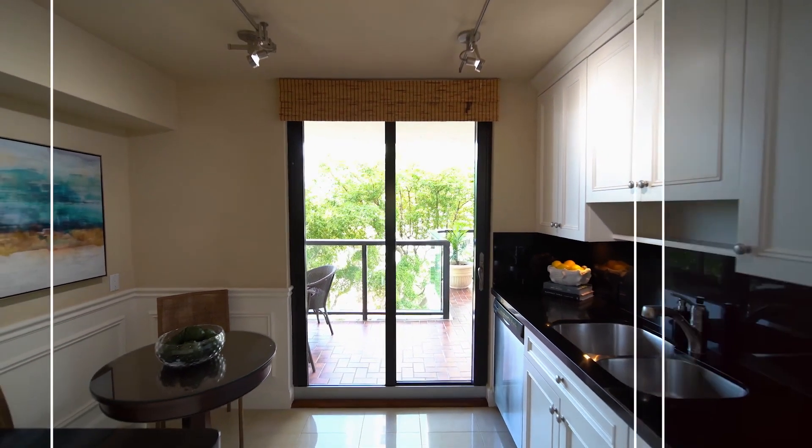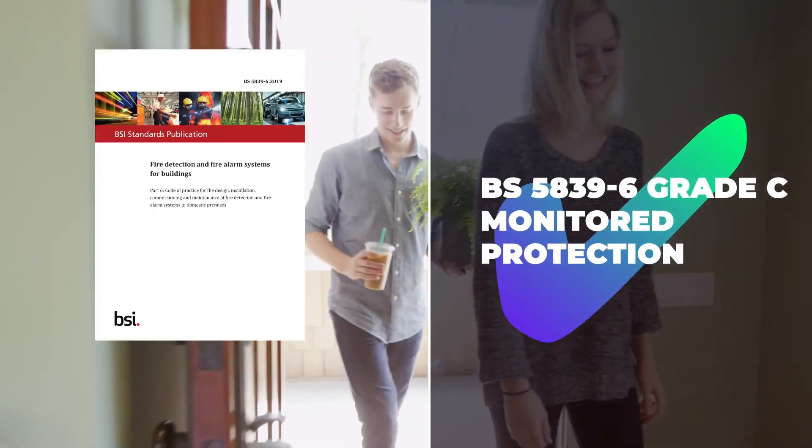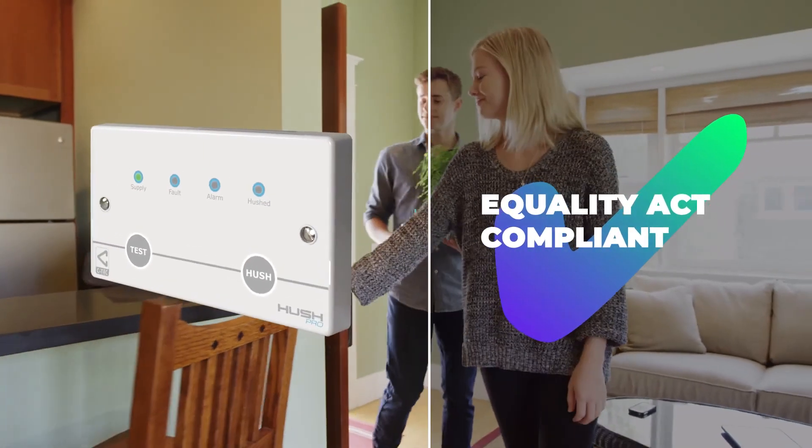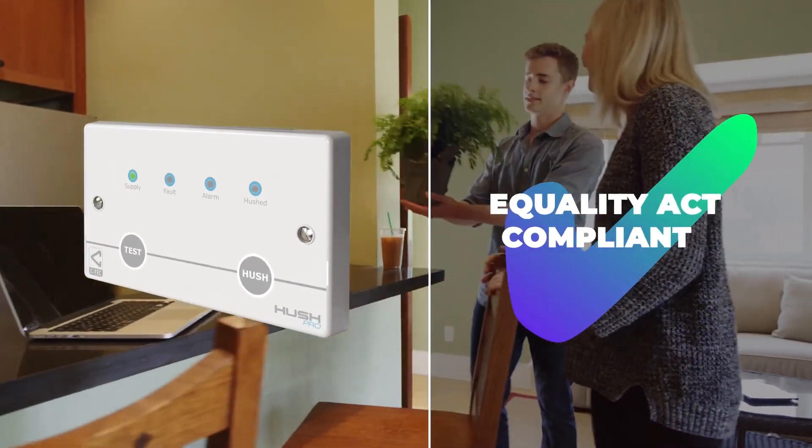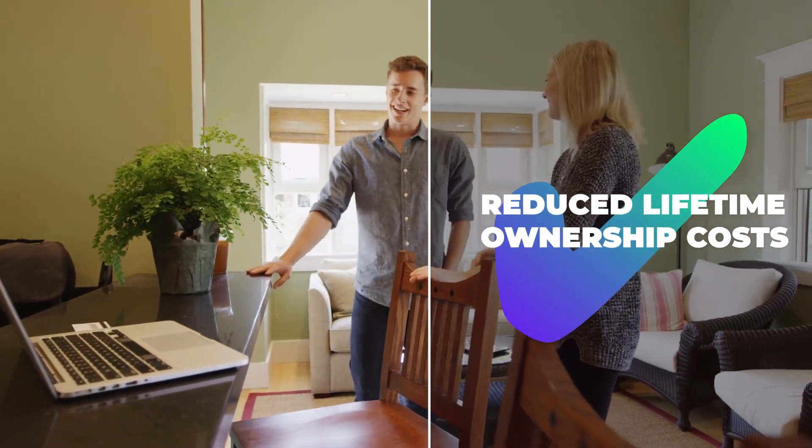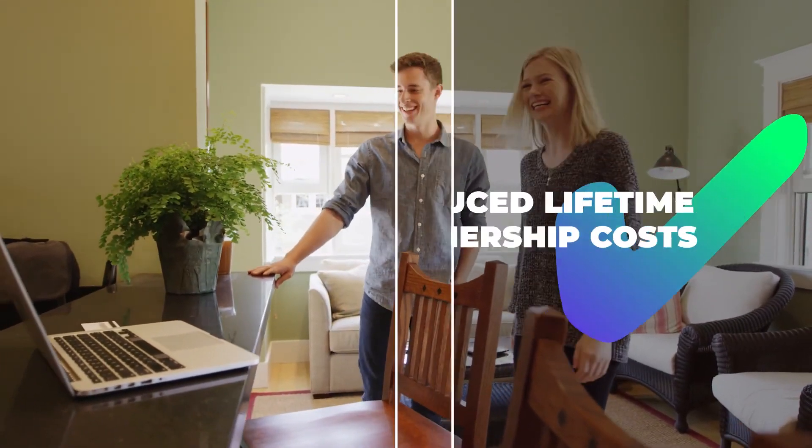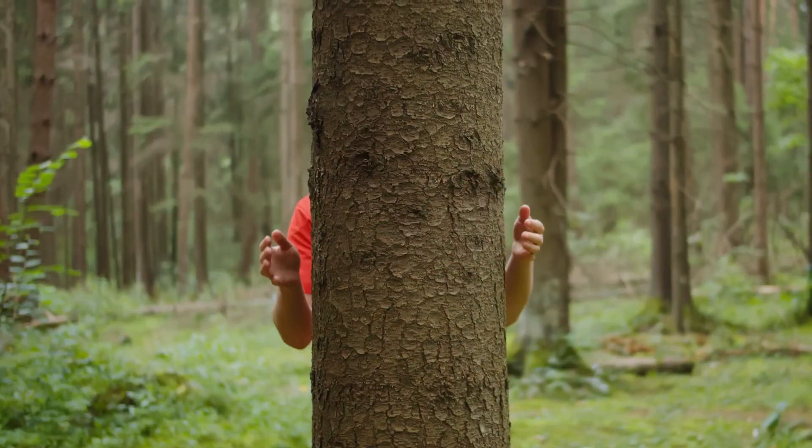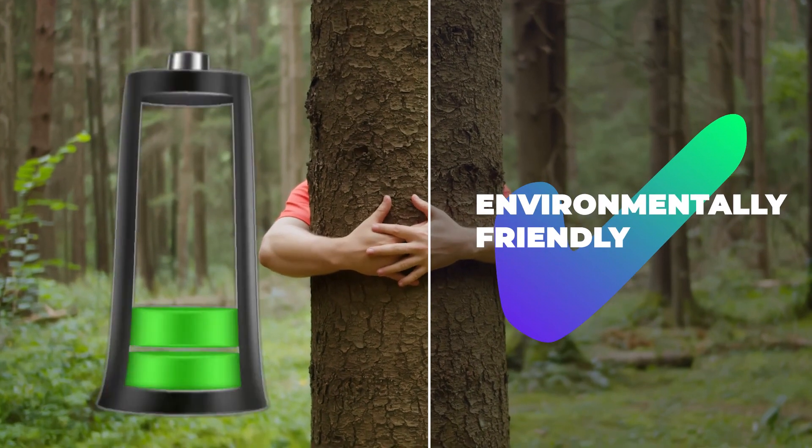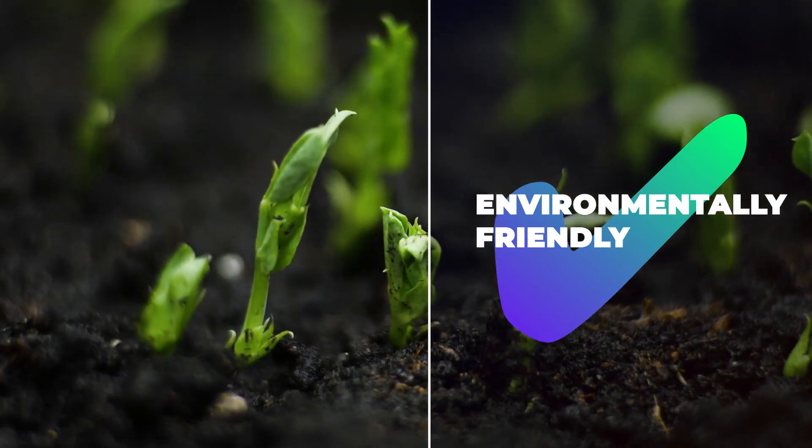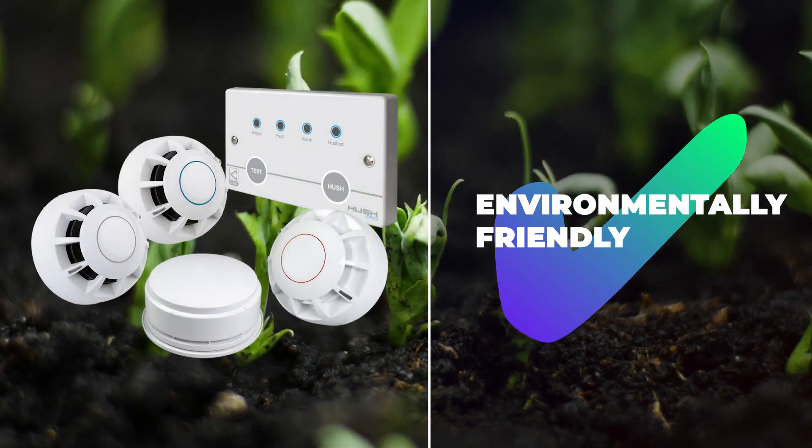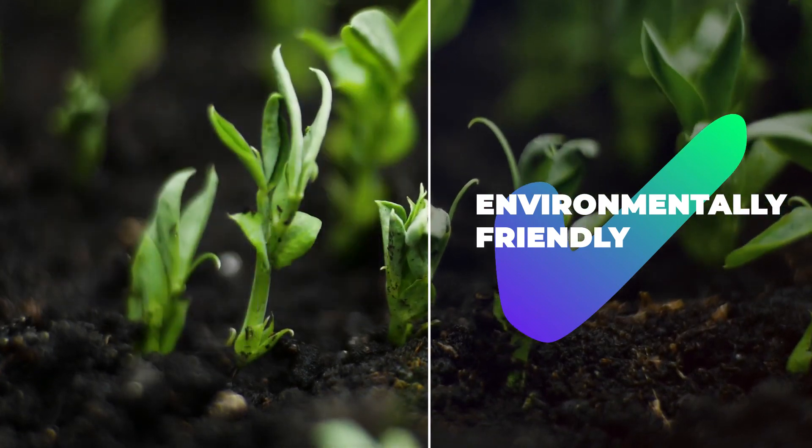It offers BS5839 Part 6 protection in individual flats. A low level controller which is much more accessible. Substantial lifetime ownership cost reductions. For example you don't necessarily have to change the devices after 10 years. It's environmentally friendly. It takes 50% less power than many lower grade solutions. The devices are smaller and use less plastic. And typically you only need one battery per flat.